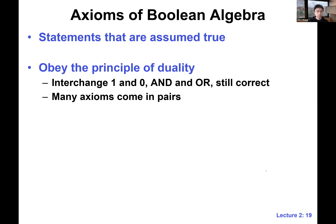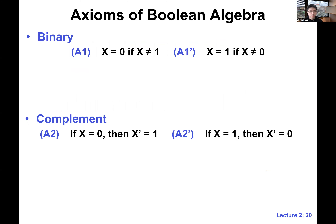Duality means in many cases you just interchange zero and one, and AND and OR, and we may still have a valid axiom or theorem. For example, the min-term and max-term have this duality. So first let's look at some of the very basic axioms.